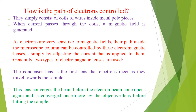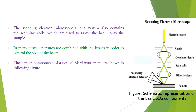By simply adjusting the current applied to the lenses, the electron path is controlled. Generally two types of electromagnetic lenses are used. Number one is the condenser lens, which is the first lens that electrons meet as they travel towards the sample. This lens converges the beam, which then opens again and is converged once more by the objective lens before hitting the sample. The condenser lens defines the size of the electron beam, which defines the resolution, while the main role of the objective lens is to focus the beam onto the sample.